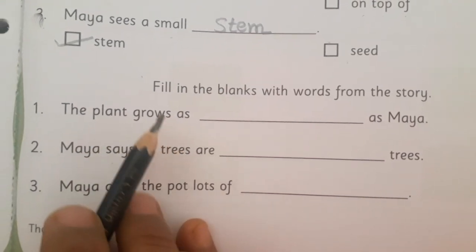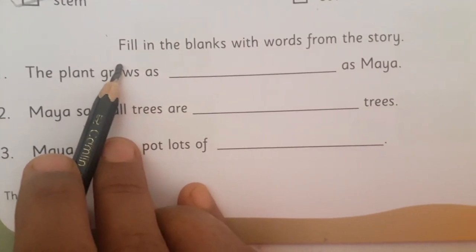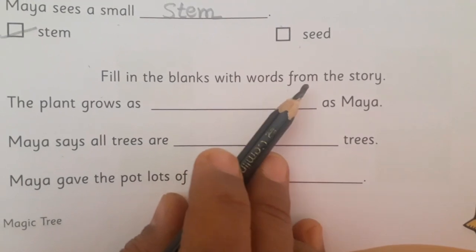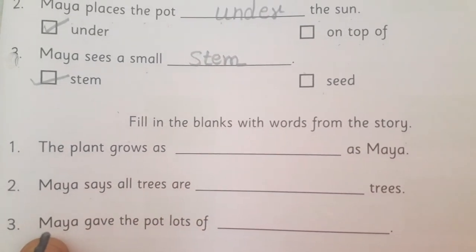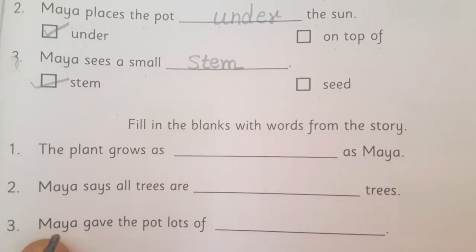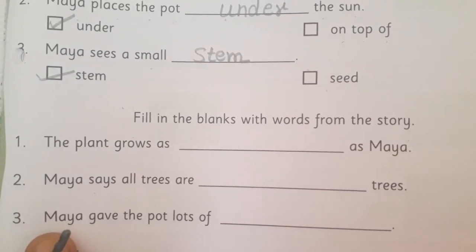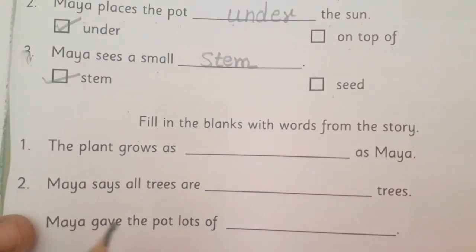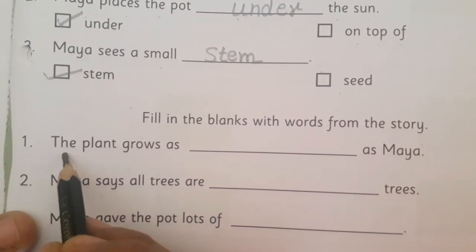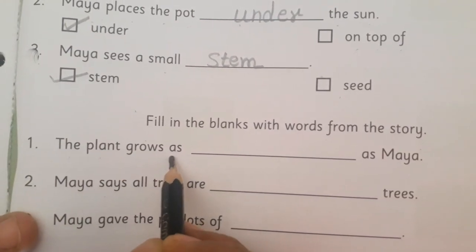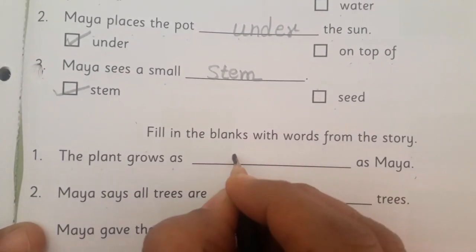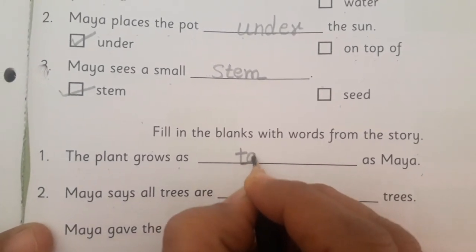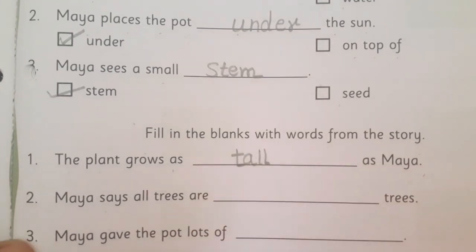The last exercise on page 75 is fill in the blanks with words from the story. You have already read the story and know the vocabulary. First sentence: 'The plant grows as dash as Maya.' What will be the answer? As tall — yes, very good.